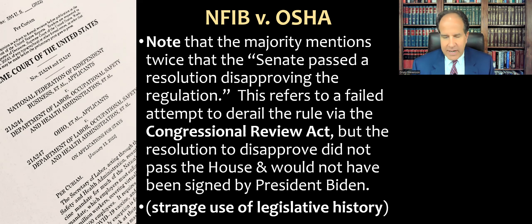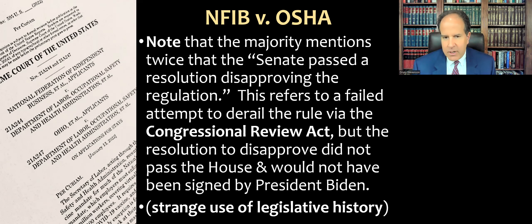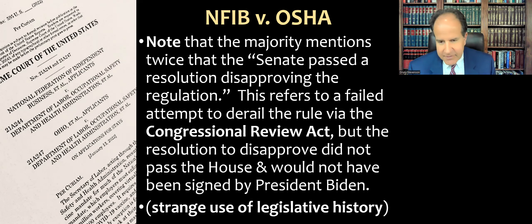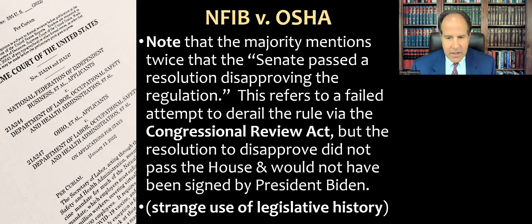The Congressional Review Act is our modern version of the line item veto — if Congress doesn't like a specific new rule or agency action, they can pass a resolution, which is easier than amending a statute, but it still has to pass both houses and be signed by the president. The Senate passed a resolution to disapprove, knowing the House was not going to affirm it and President Biden was definitely not going to sign it. Since Biden had actually asked OSHA to promulgate this rule, this was essentially political theater.